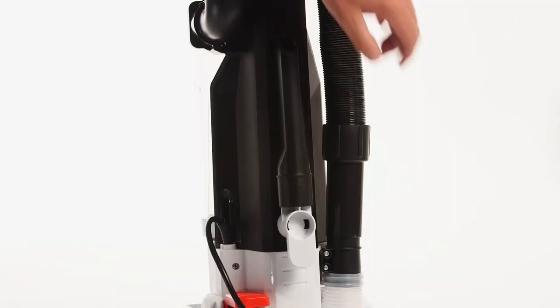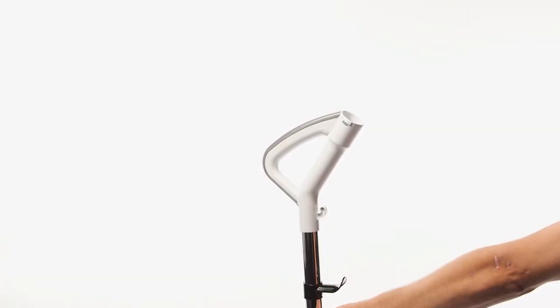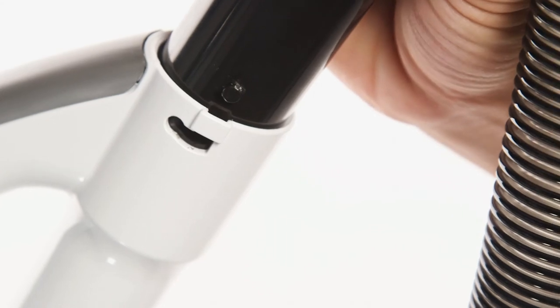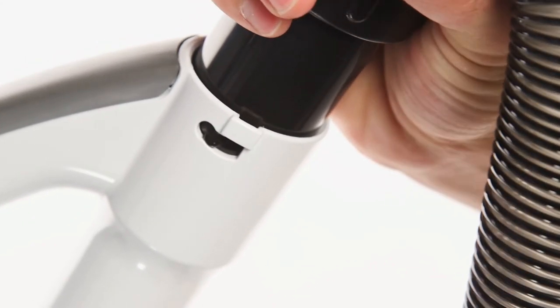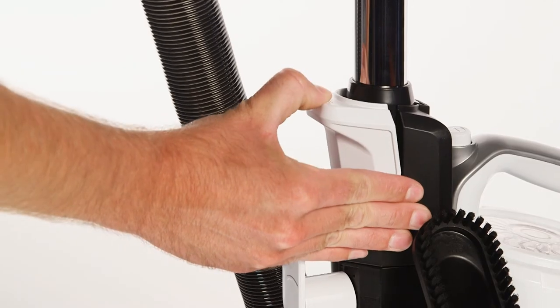To use the attachments, pull up on the hose connection to remove it from the hose inlet. Next, push the end of the hose into the top handle and twist clockwise until it locks into place. Press the handle release latch and pull the handle out.